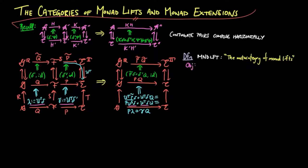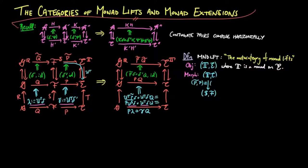We define the meta-category of monad lifts, which consists of a monad t and the category e it is defined on as objects, and morphisms as pairs p-tilda-p, which is equivalent to lambda-p, where p-tilda is an Eilenberg-Moore lift of p through us-ut, and lambda is the corresponding natural transformation defined as ut-delta, where delta is the left mate of the identity as described on the left.